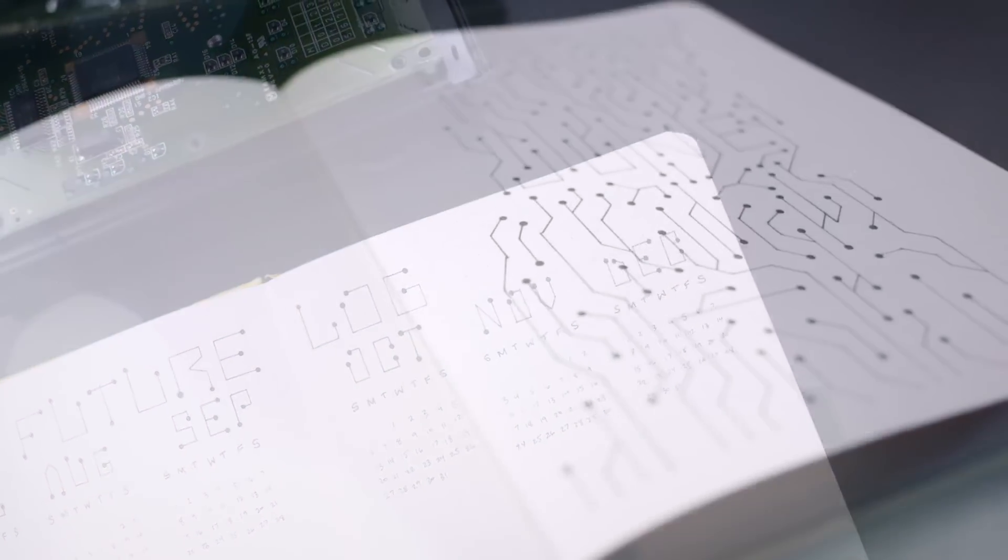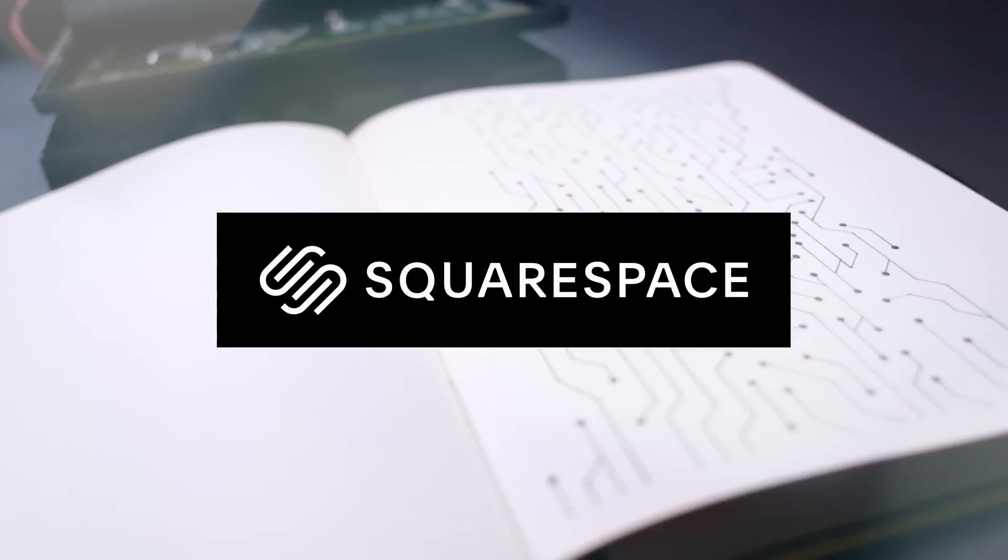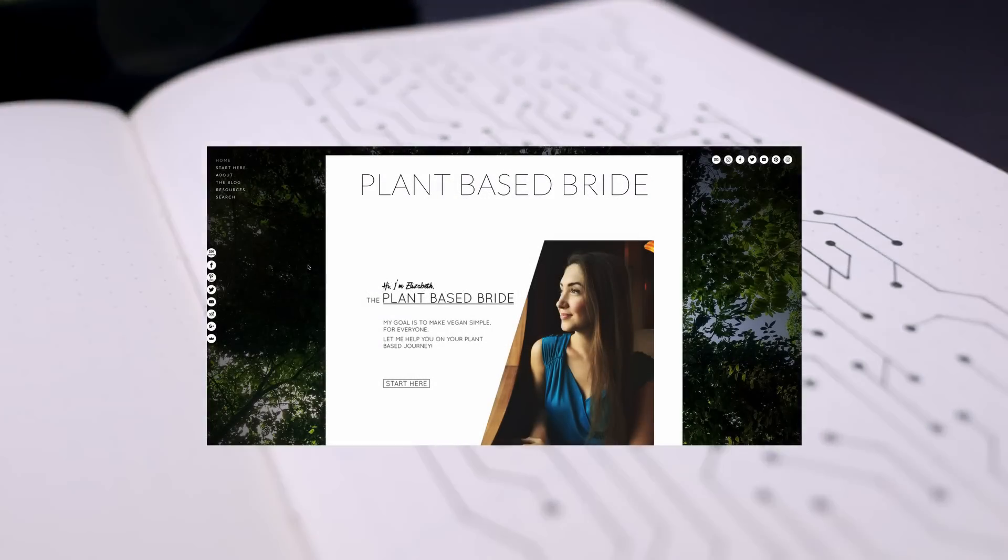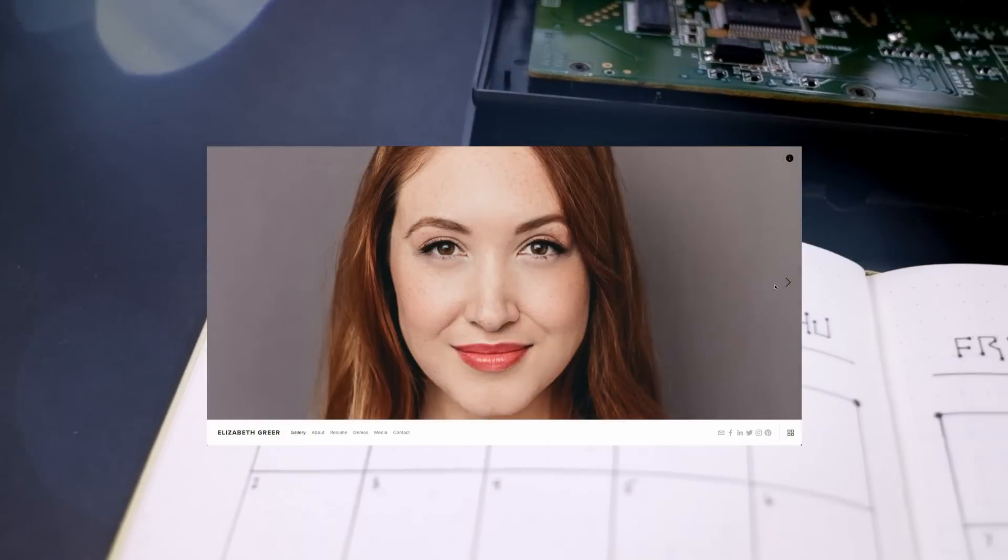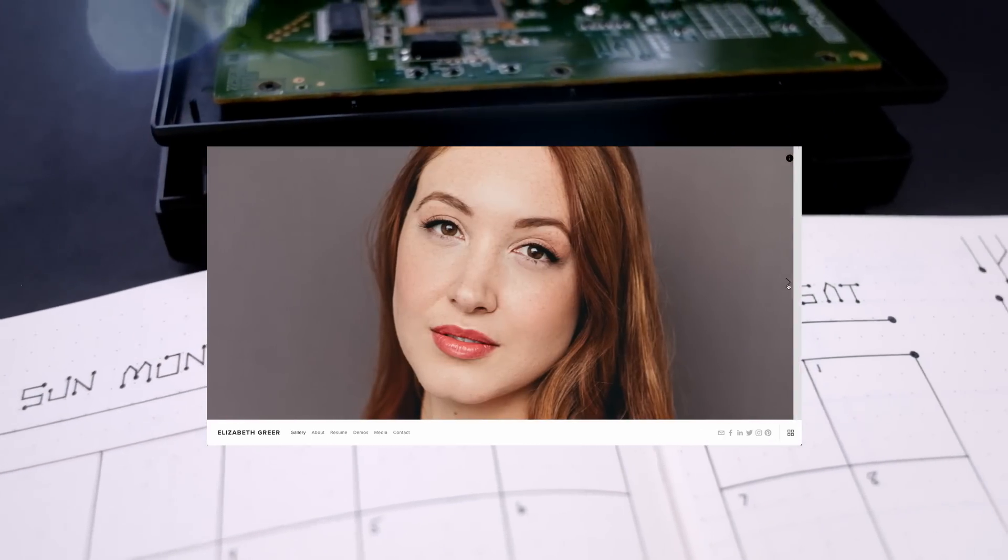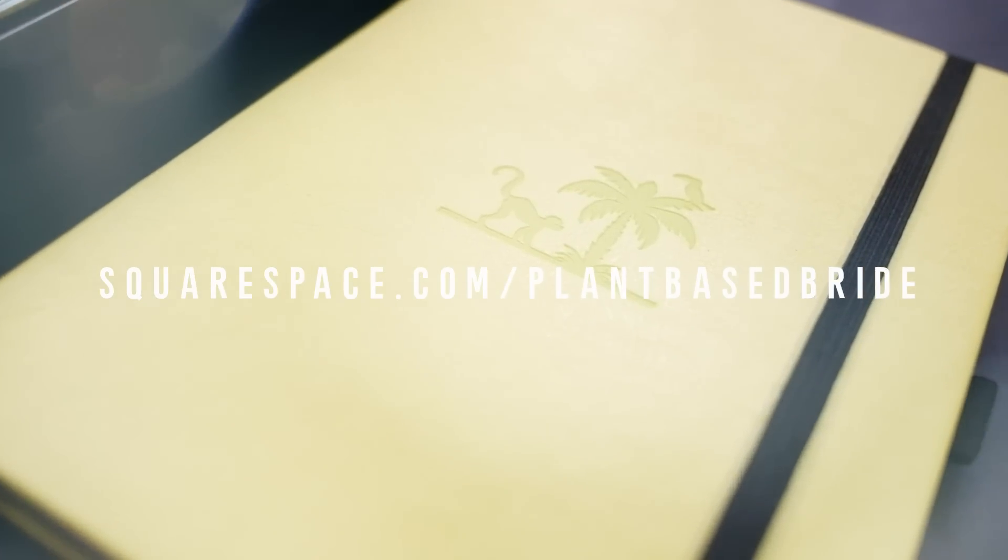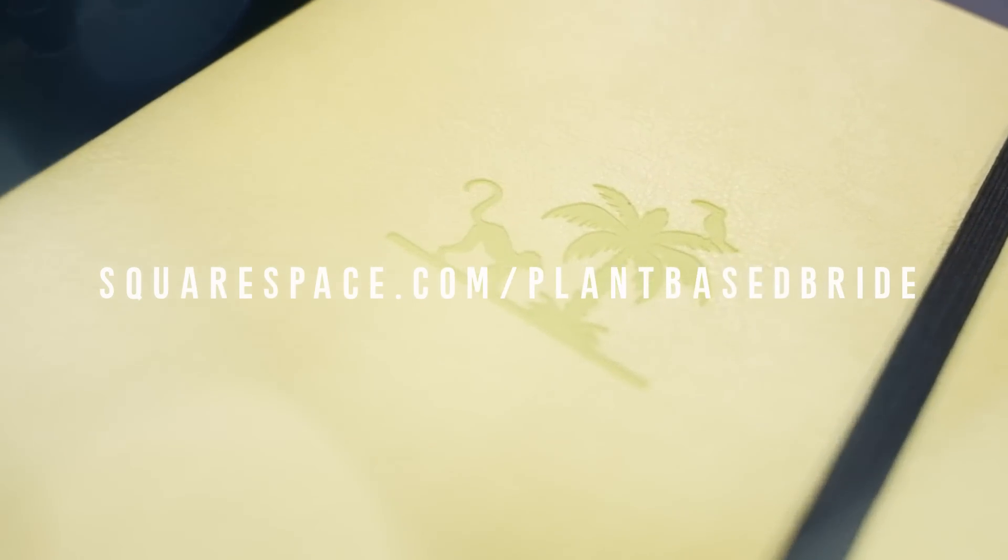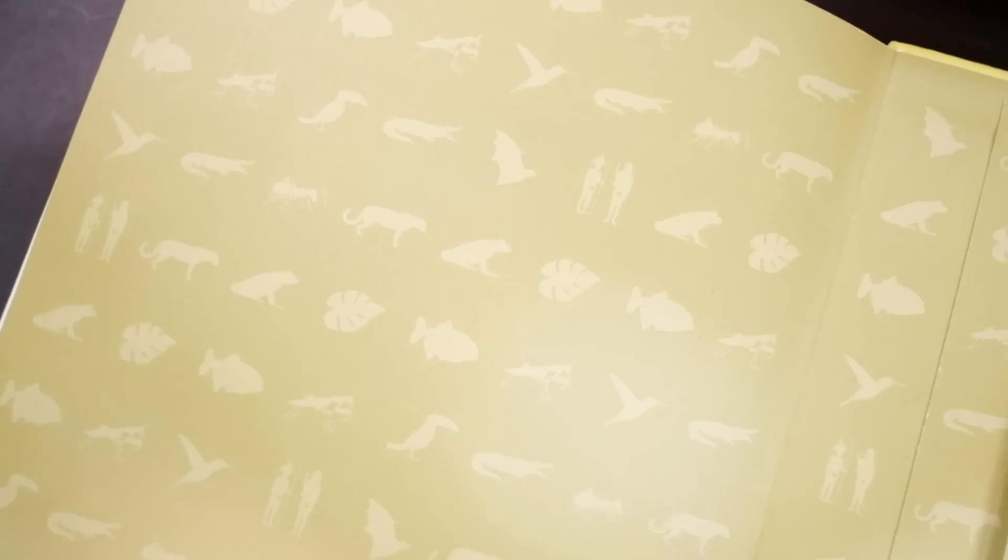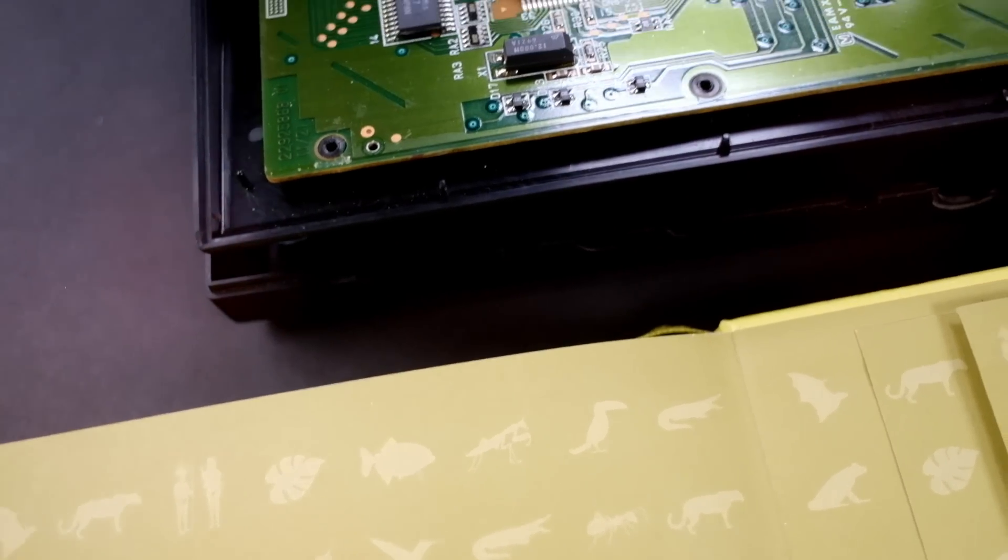Before we get into the planning, I want to thank today's sponsor Squarespace. From websites and online stores to marketing tools and analytics, Squarespace really is an all-in-one platform to build a beautiful online presence with ease. Go to squarespace.com slash plant-based bride for 10% off your first purchase. I'll talk a little bit more about Squarespace at the end of the video, but for now let's get into setting up my husband's brand new bullet journal.